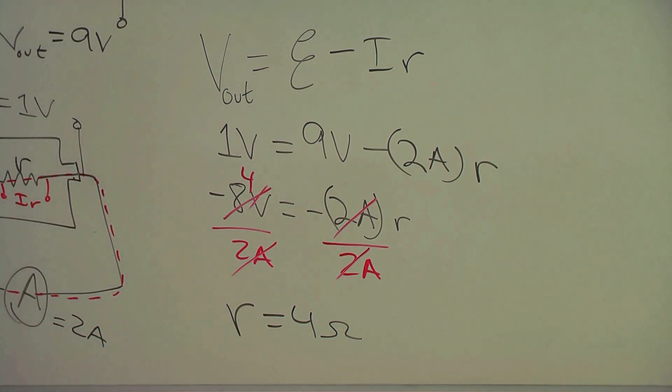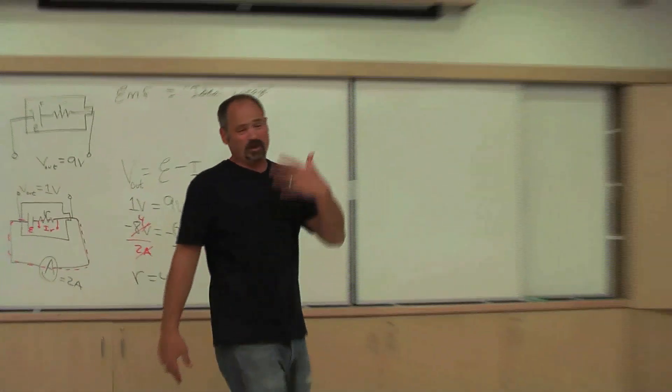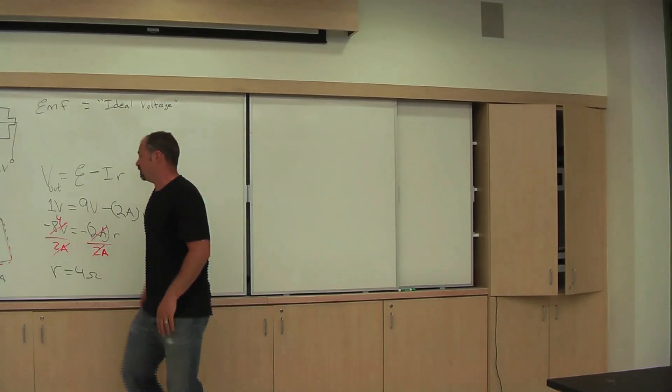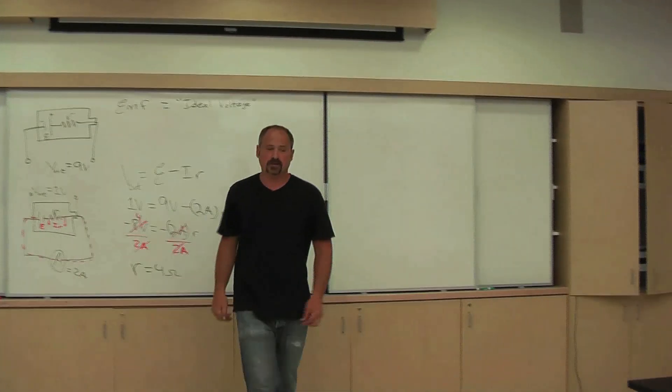That explains why the voltage drops so much as the current starts coming out of the battery. It has internal resistance, and therefore there's a voltage drop here, inside the battery itself.